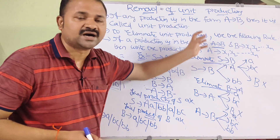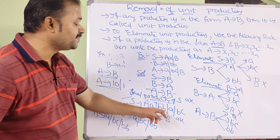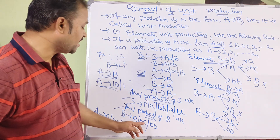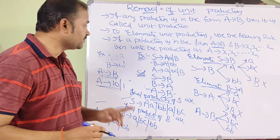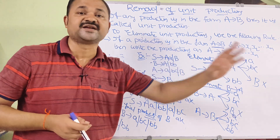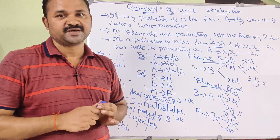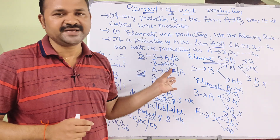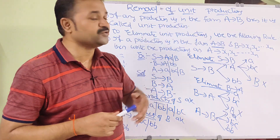After removing all unit productions, the final grammar is: S produces AA, BB, or AB; B produces AB, BC, or BB; A produces AB, BC, or BB. This is a very important model where every non-terminal is producing other non-terminals. In this example, no non-terminal was producing terminals directly. If a non-terminal were producing terminals, we could simply substitute those. This concludes the removal of unit productions.